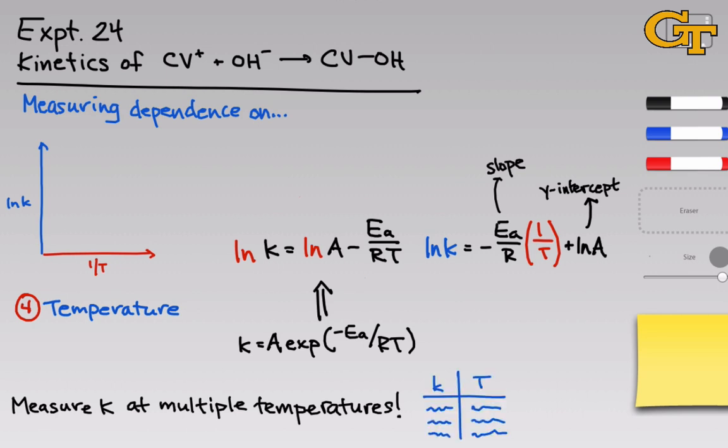We'll do three temperature runs in this experiment. The result should be a downward-sloping line where the slope is related to negative E_a over R and the y-intercept equals the natural log of A.